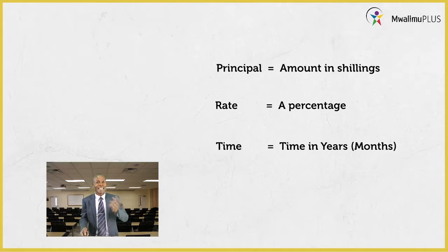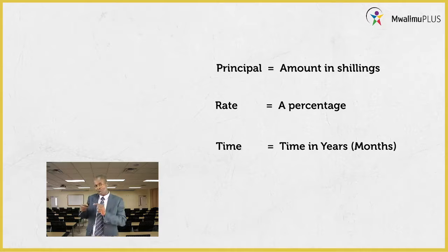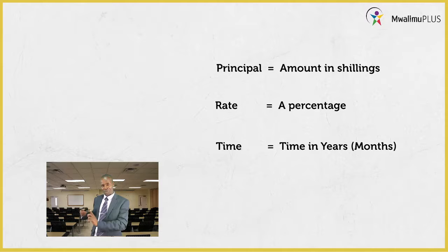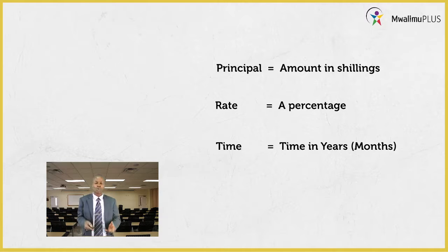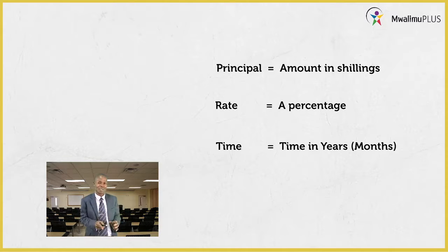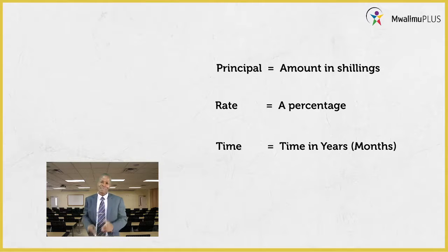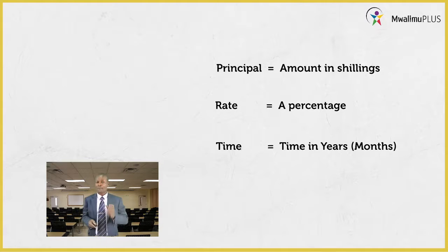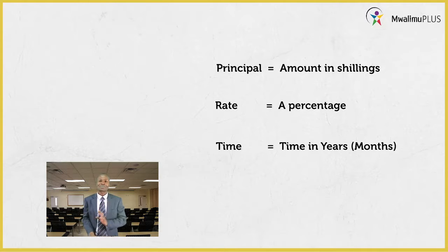The terms I was talking about: P stands for principal, R stands for rate, and T stands for time — which can be in years or in months. Rate is simply a percentage given by the bank. Principal is the amount that should be given in shillings.